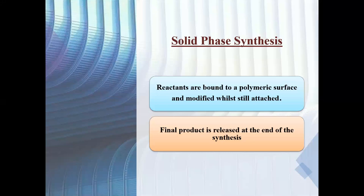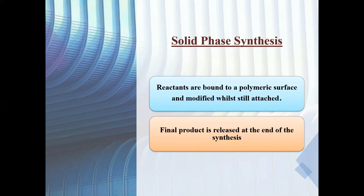What is solid phase synthesis? The name says it is solid phase, so for synthesis we are using some solid support. During the synthesis there are two things: reactants and the product obtained after synthesis. Here the reactants are bound to a polymeric surface and modified while they are attached to that polymeric surface. There is formation of the product, and after formation we remove the product — the final product is released at the end of synthesis.